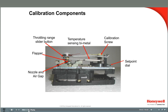Here you can see the nozzle flapper assembly. The nozzle allows air to bleed off, reducing pressure downstream. The flapper sits over the nozzle and blocks or allows air to bleed off. Above the flapper is the bimetal — an element that bends in response to room temperature, which pushes the flapper to a certain distance from the nozzle, controlling the bleed rate.